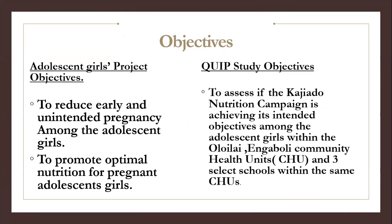The adolescent girls project has two broad objectives. The first objective is to reduce early and unintended pregnancies among the adolescent girls, and the other is to promote optimal nutrition for pregnant adolescent girls. For the QUIP study, our general objective was to assess if the campaign is achieving its intended objectives among the adolescent girls within two community health units — Oloidilai and Nkaboli — and within three randomly selected schools.